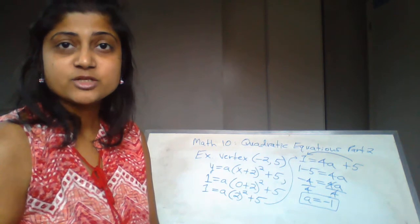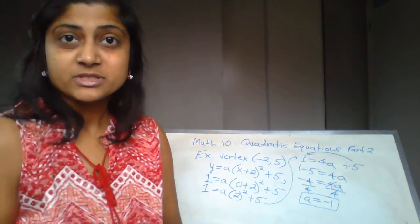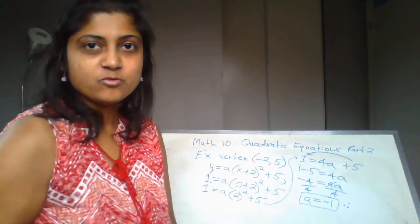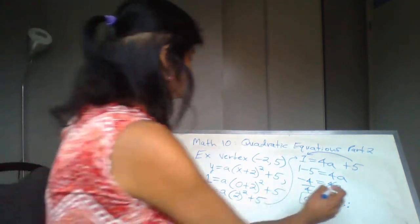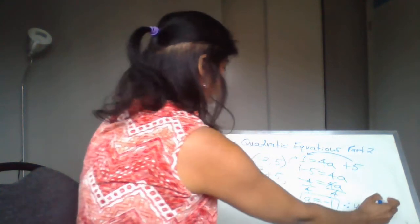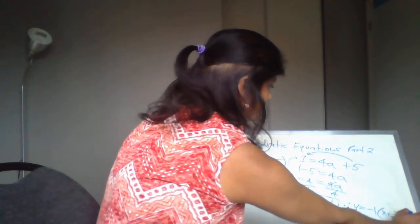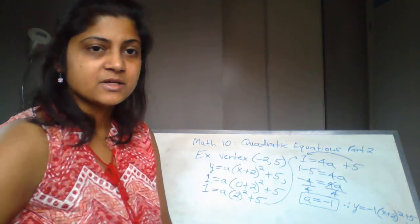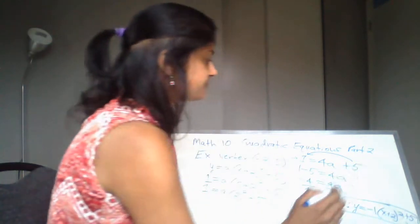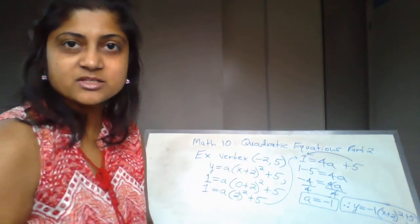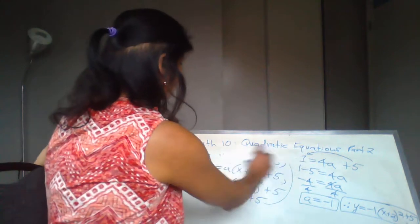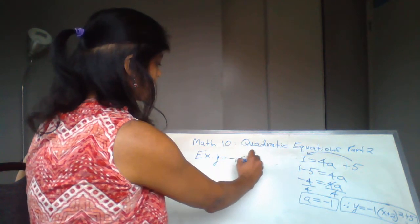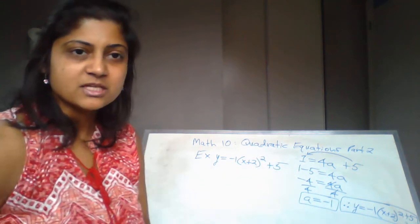I like boxing the final answer for the value of a, but make sure you state the equation or the teacher will take off a mark. Because a is negative 1, I indicate it in the equation: therefore, y = -(x + 2)² + 5. Now let's change this back into standard form. I'm going to rewrite the equation: y = -1 · (x + 2)² + 5.